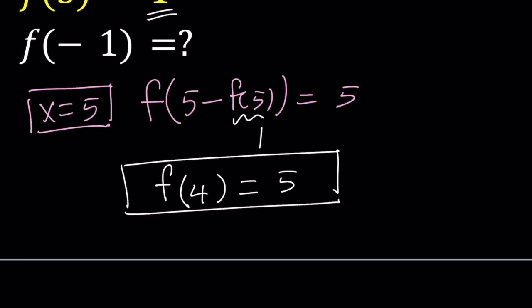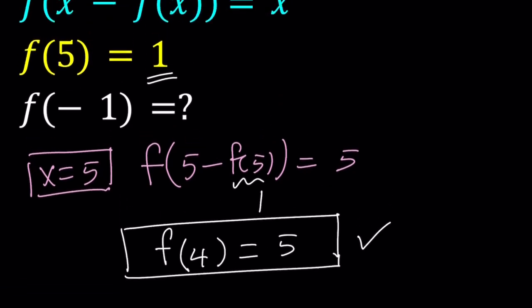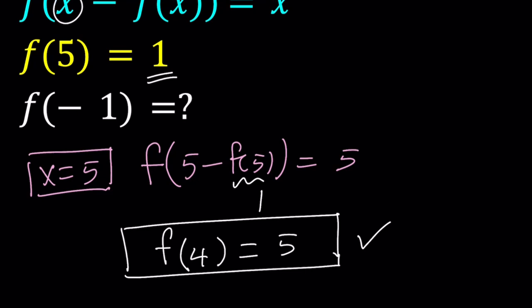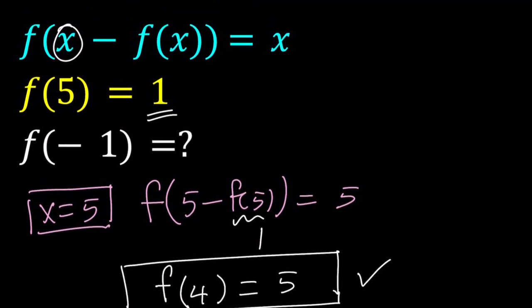That's not what we're looking for, but we're going to use it for sure. Now we're looking for f of negative 1. So since we got f of 4 from here, let's replace x with 4 now in the original equation.